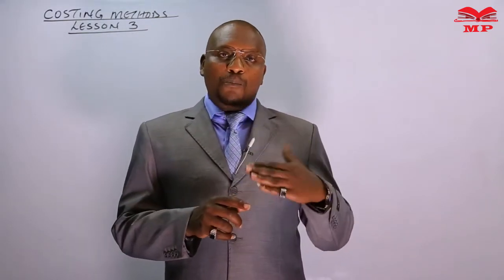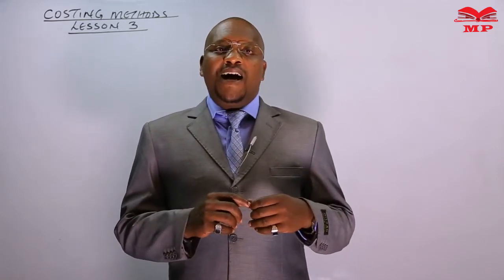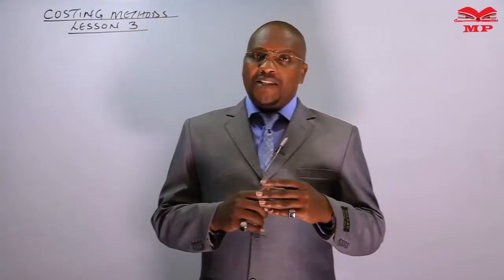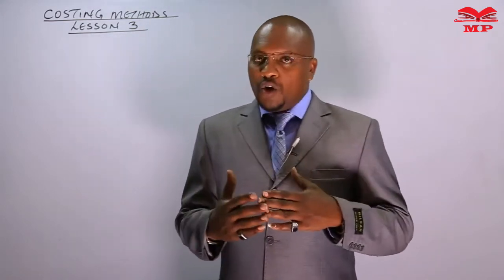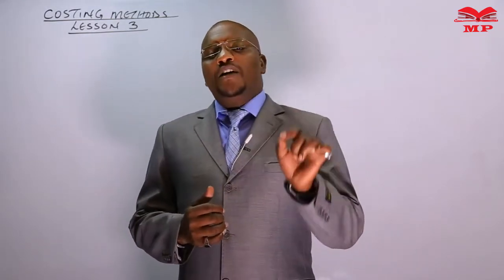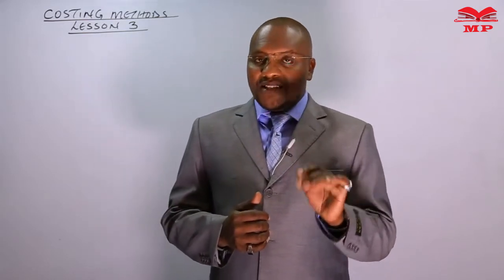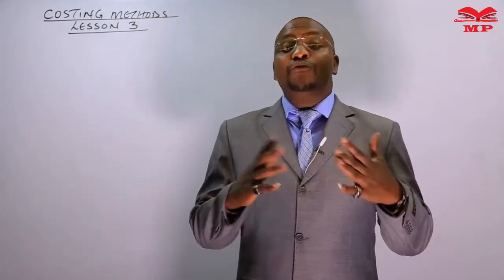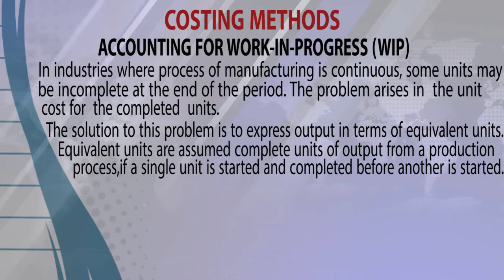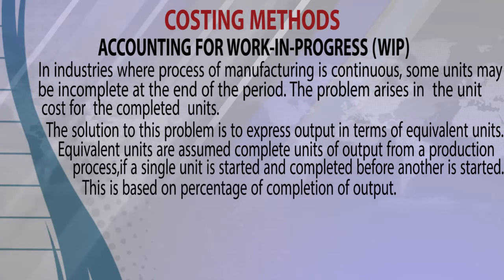For example, if you have completed units halfway — 50% complete — and there are 300 such units, instead of saying 300 units, we take half of 300, which is 150. So we talk of 150 equivalent units that have been completed, even though actually 300 units have been done halfway. This is based on the percentage of completion of outputs.